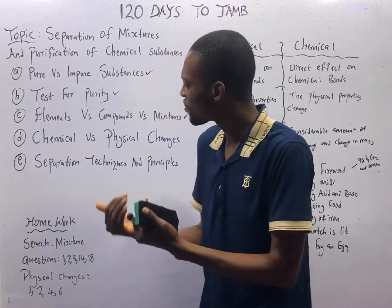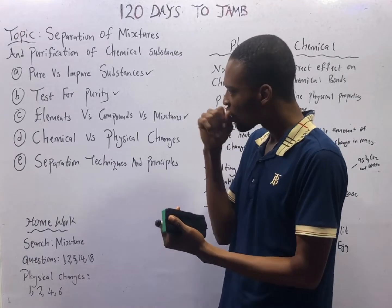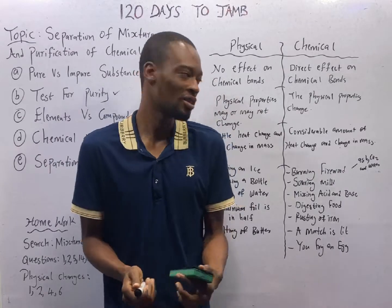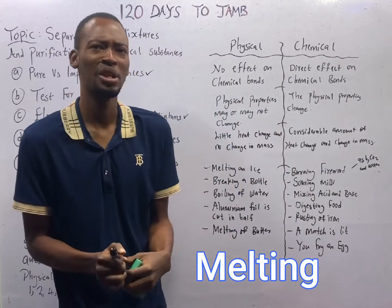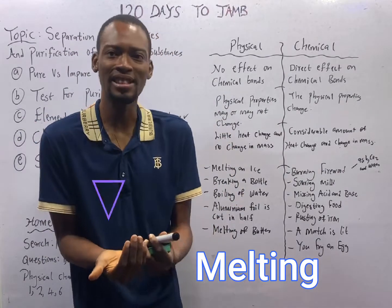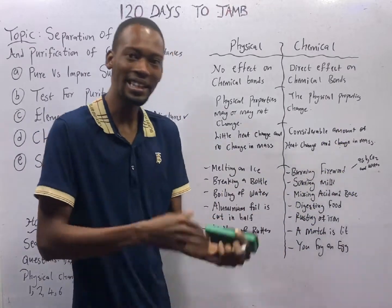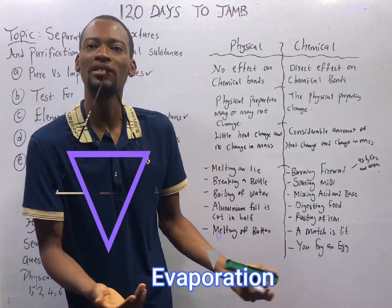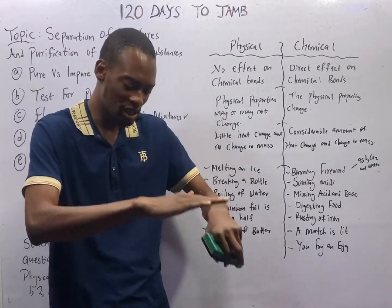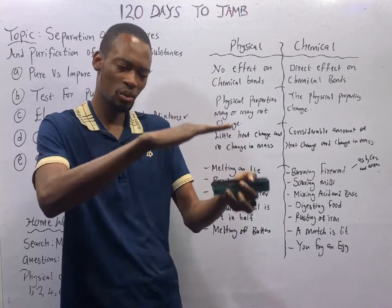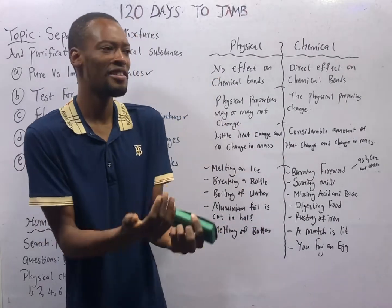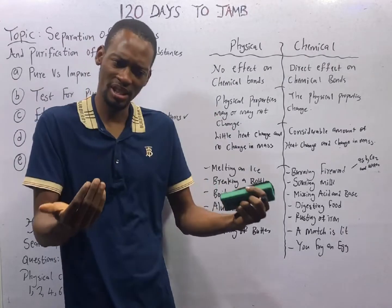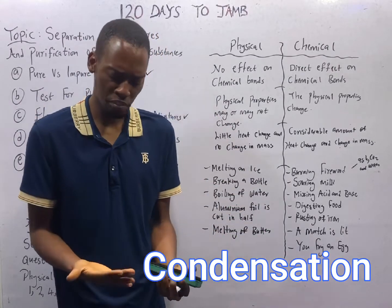When you look at change of state of matter — when matter in solid state goes to liquid state, we say that it is melting. Matter can change from liquid state to gaseous state; we call that evaporation. Matter can change from gaseous state to liquid state when you allow it to condense. That change from gaseous state to liquid state is called condensation.